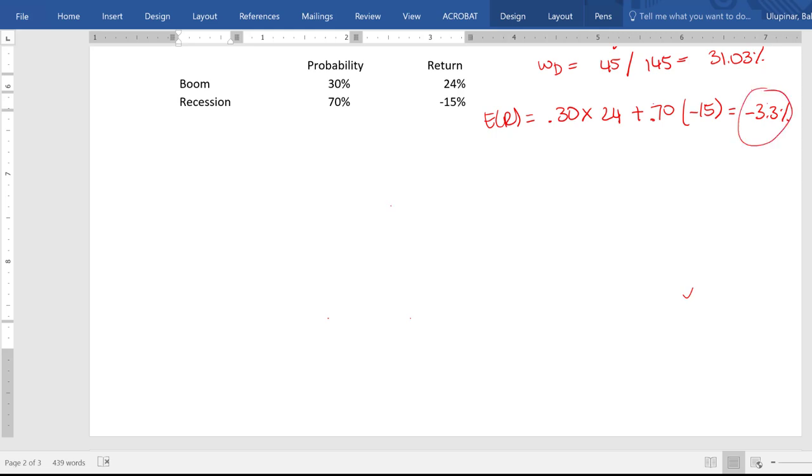So the variance will be equal to the probability of the state times the return minus negative 3.3% to the second power. And when you solve for this, since I didn't adjust for the decimals here, I used the percentages.